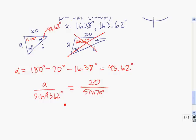So to find a, we multiply both sides by sine of 93.62. And if we plug that into the calculator, we get approximately 21.24.